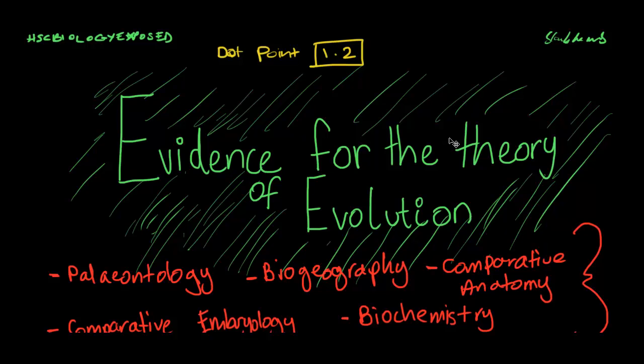Hey guys, today I'm going to be talking about dot point 1.2. This dot point asks for the theory for evolution is supported by many pieces of evidence which include paleontology, biogeography, comparative anatomy, embryology and biochemistry.